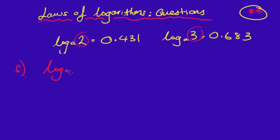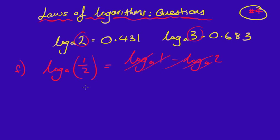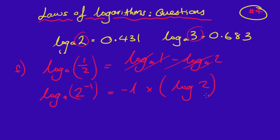Find the value of log_a(1/2). There are lots of different ways you can do it. I could start by doing log_a(1) minus log_a(2), but I only have the values of log2 and log3, so I am a little stuck with log_a(1). So instead I write it as log_a(2⁻¹). I can bring the negative 1 down in front of the log to get negative 1 times log_a(2). We know log2 is 0.431, so the answer is simply negative 0.431. Sometimes if the first approach doesn't work, look for another option.